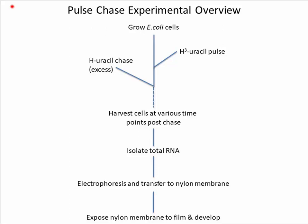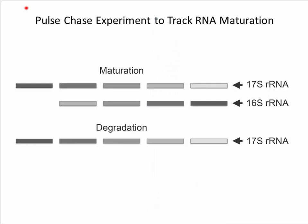To assess maturation of 17S RNA into 16S RNA, we performed a pulse chase experiment. E. coli cells were grown to mid-log phase and then pulsed with tritium-labeled uracil, followed by a chase with excess uracil to allow labeling and subsequent tracking of the RNA. The cells were harvested at various time points post-chase and total RNA was purified and separated by gel electrophoresis. The rationale is that if the 17S RNA is being processed by removal of its 5' and 3' ends, there will be a transition from the higher molecular weight 17S RNA signal to the lower molecular weight 16S RNA signal over time. Conversely, if labeled 17S RNA was incapable of being processed, it would subsequently be degraded.